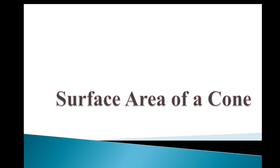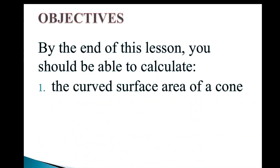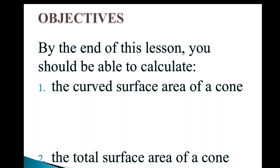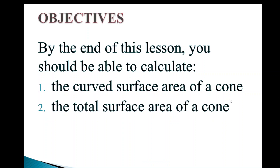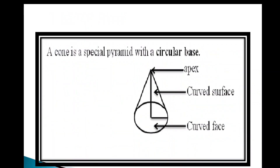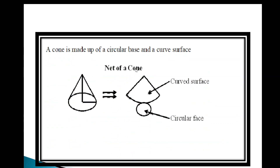Welcome to this class on surface area of a cone. The objectives are: firstly, we're going to find the curved surface area of a cone, and after that we'll look at the total surface area of a cone. A cone is a special pyramid with a circular base. It has a circular base, a curved surface, and an apex, just like a typical pyramid.